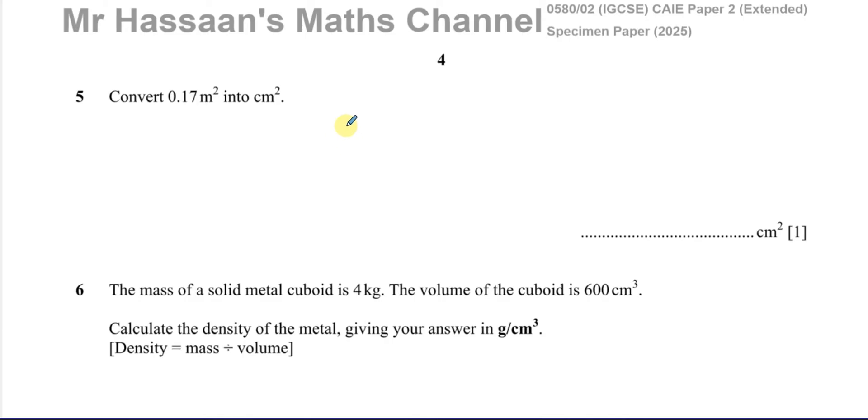So again this is a non-calculator, we can't use a calculator for this. Now here we have a conversion of units from m² into cm², converting square units. Now the way I like to deal with this first is I like to think about how to convert from m to cm first. Now we're going from a larger unit to a smaller unit so we multiply. And how many cm are there in a m? Well there's 100. We have to know that.